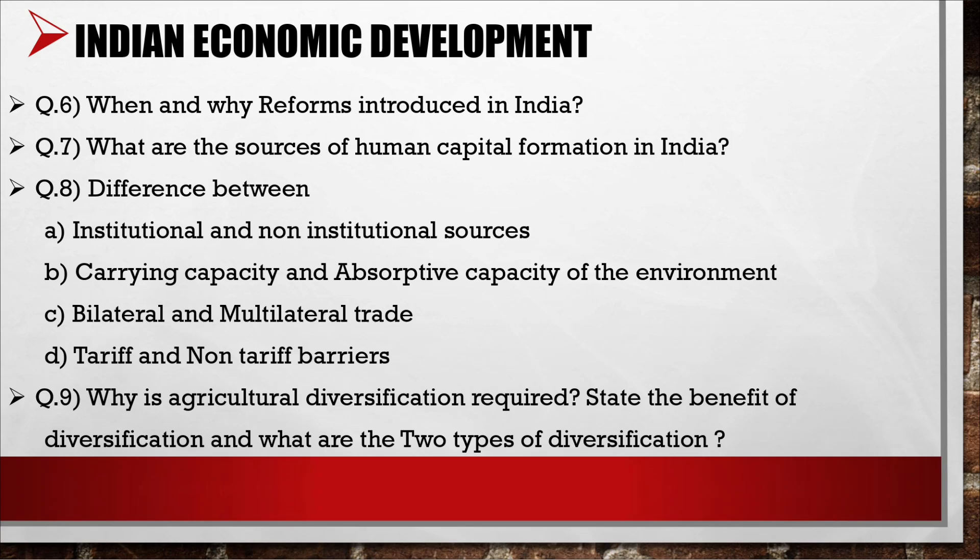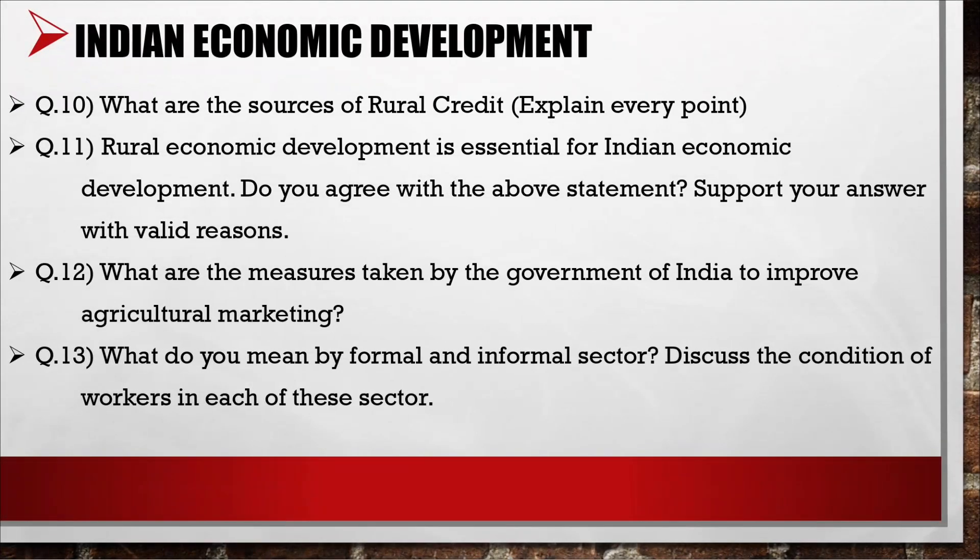7. What are the sources of human capital formation in India? 8. Differentiate between: a. Institutional and non-institutional sources; b. Carrying capacity and absorptive capacity of environment; c. Bilateral and multilateral trade; d. Tariff and non-tariff barriers. 9. Why is agricultural diversification required? State the benefits of diversification and the two types of diversification. 10. What are the sources of rural credit? Explain every point. 11. Rural economic development is essential for Indian economic development — do you agree? Support your answer with valid reasons. 12. What measures has the government of India taken to improve agricultural marketing?